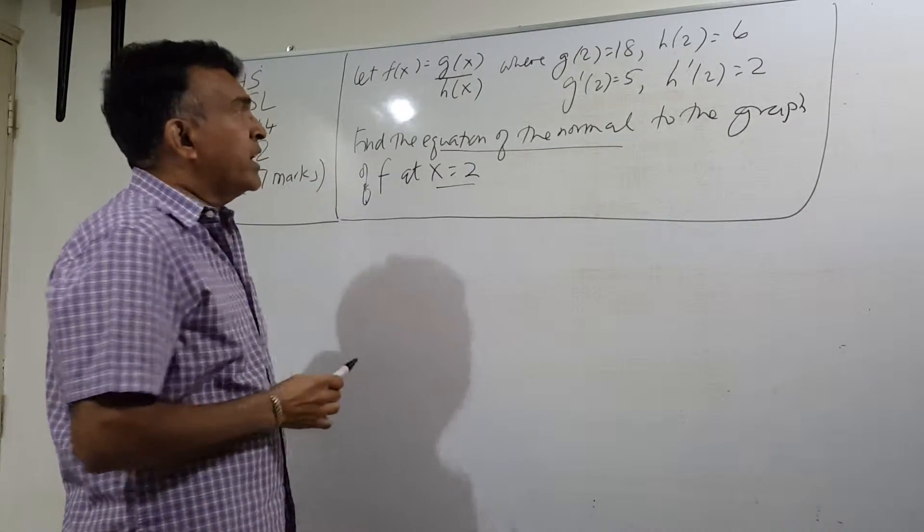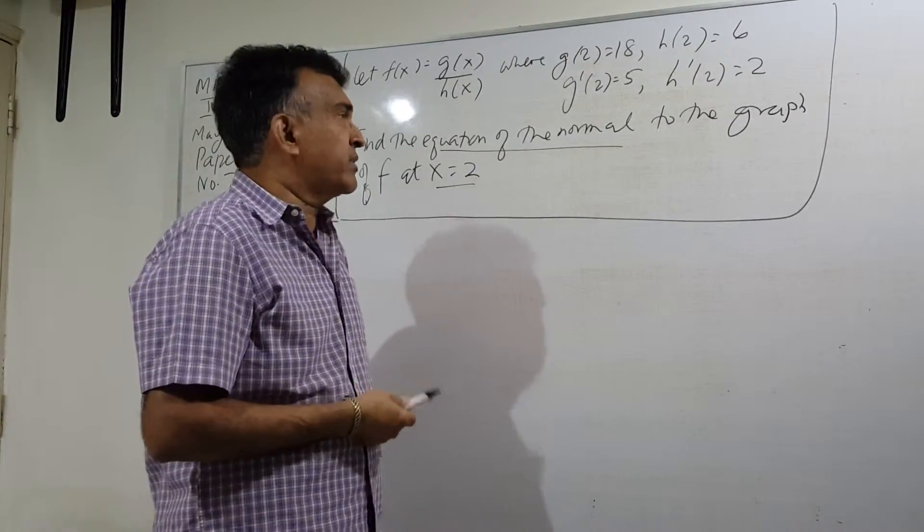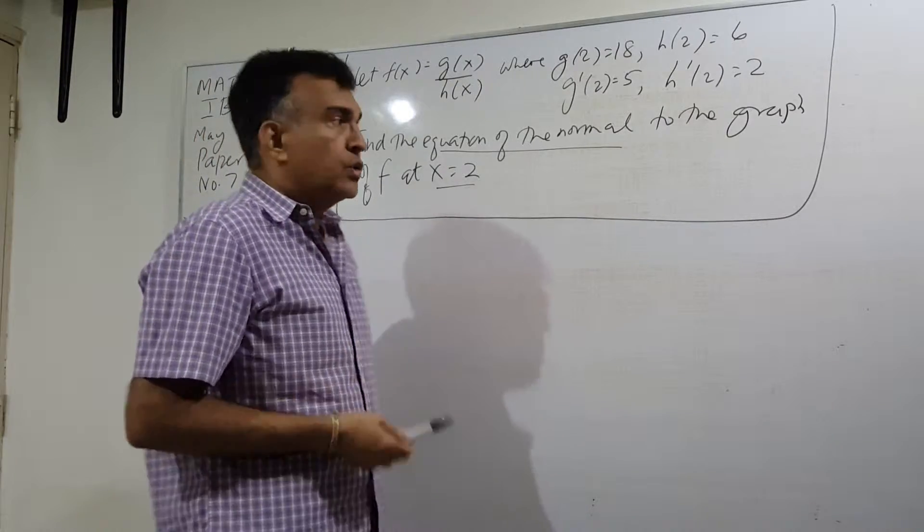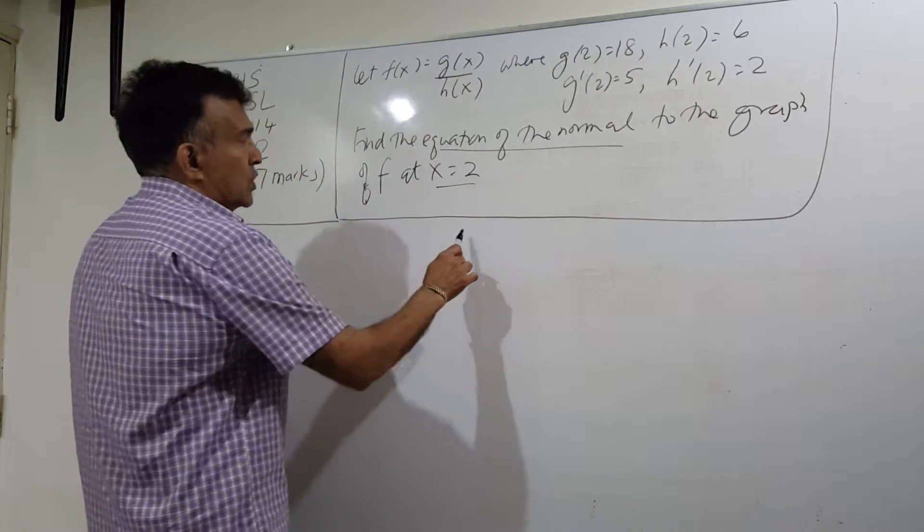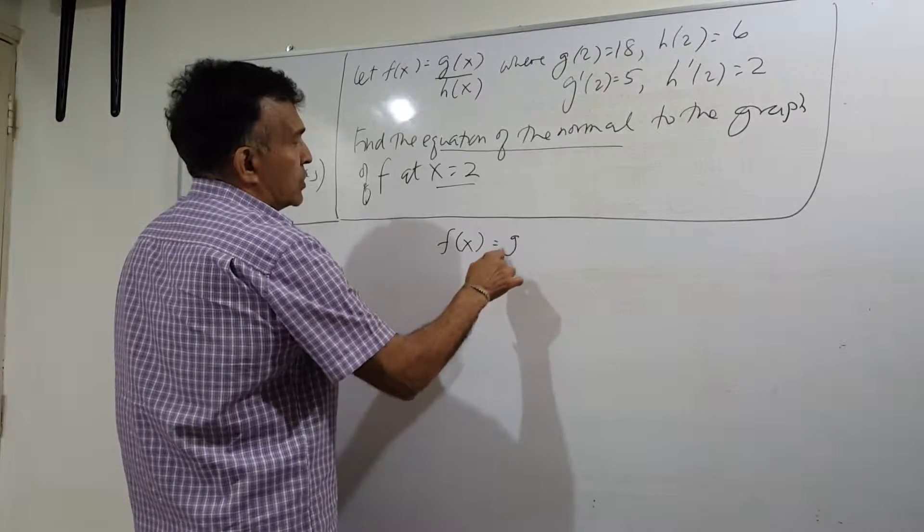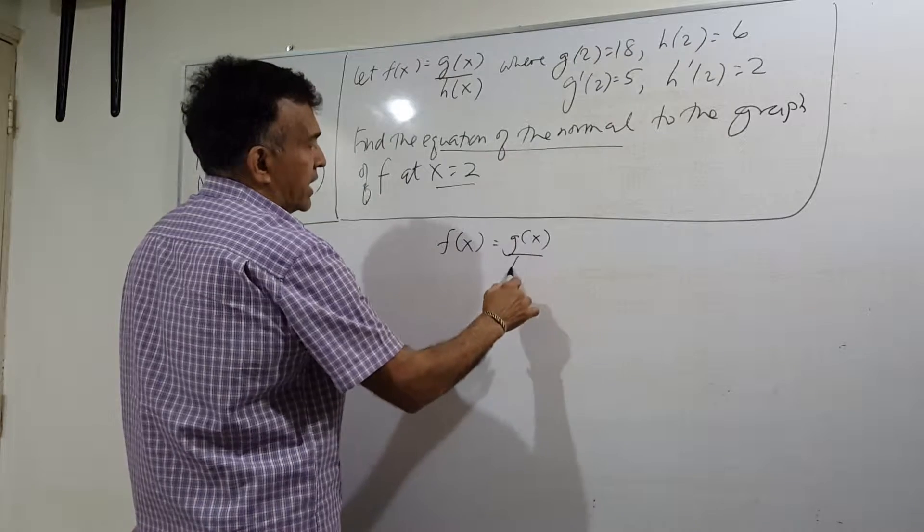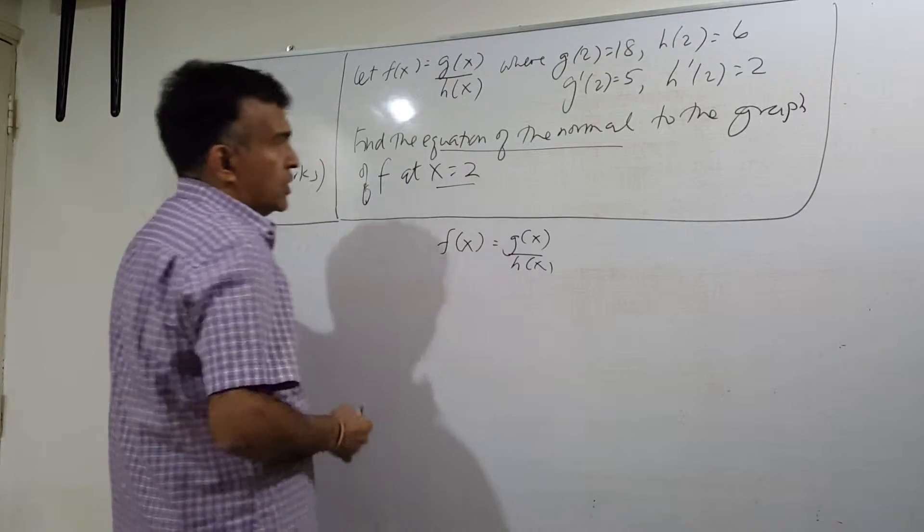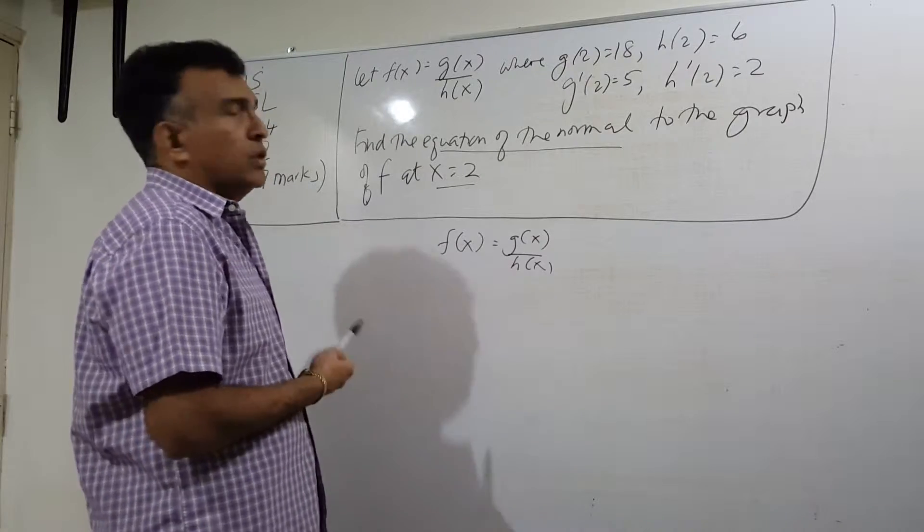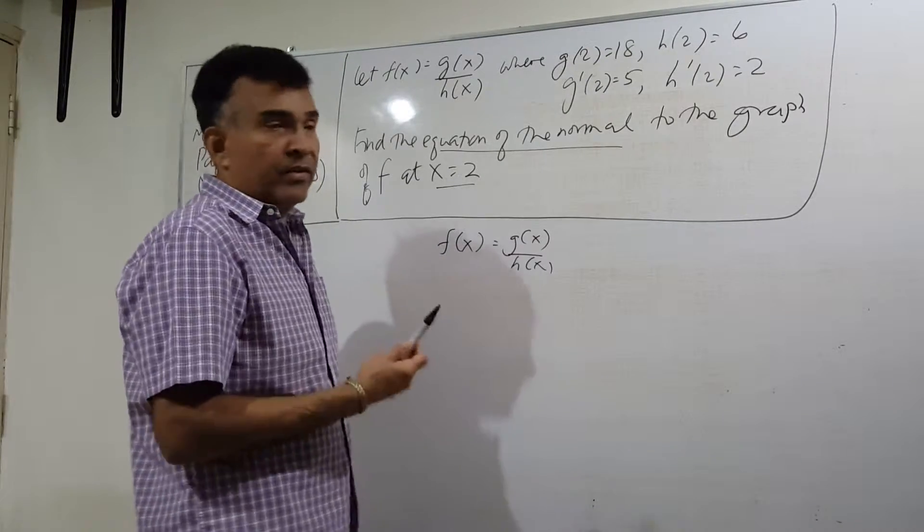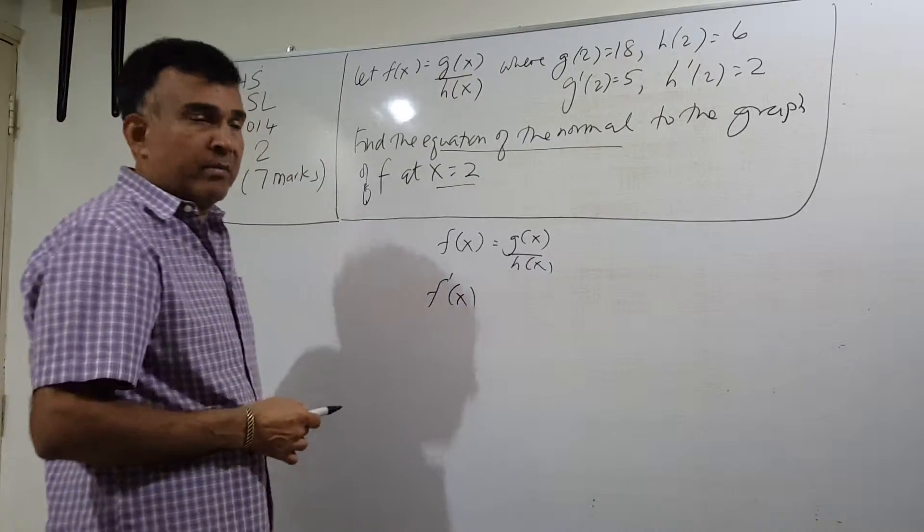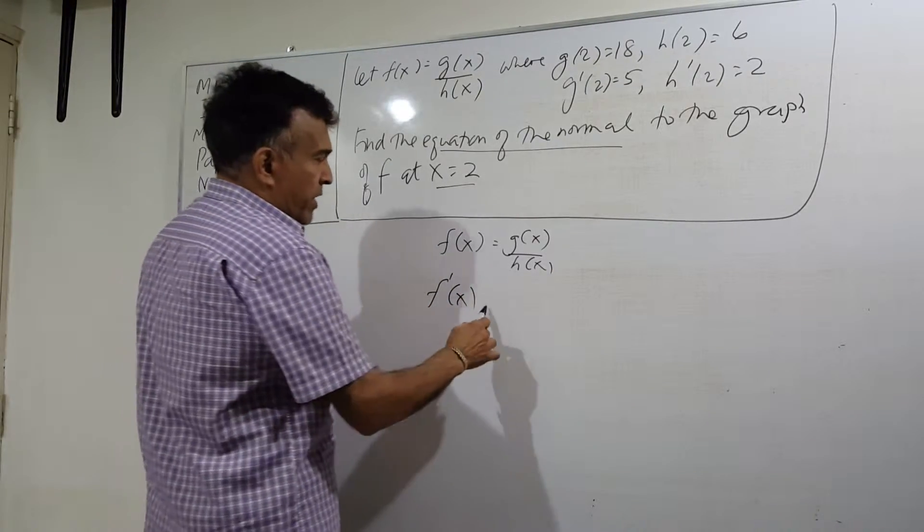Let's start. We want to find the equation of the normal. So whether it's tangent or normal, we need to find the derivative. So we know f of x equals g of x over h of x. So I'm trying to find the equation of the normal to the graph of f. I need to find f prime x.